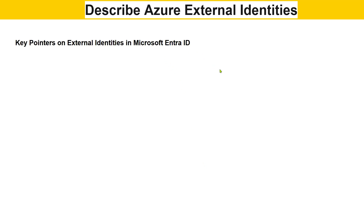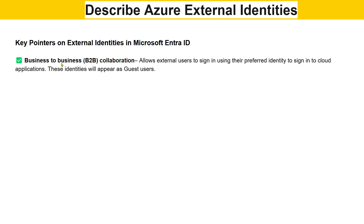There are a couple of key concepts to understand about Microsoft Entra External ID. The first is Business-to-Business (B2B). You are a business and there is another business that needs access to your applications. B2B collaboration allows external users to sign in using their preferred identity to access cloud applications. These identities will appear as guest users, so admins can see which guest users have access and at what permission levels.